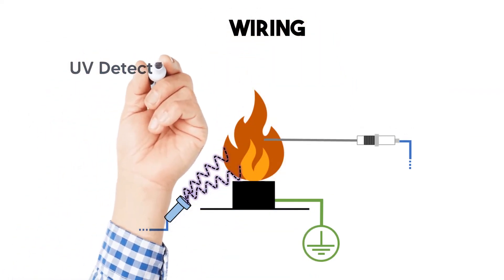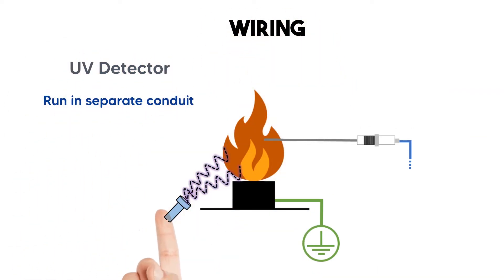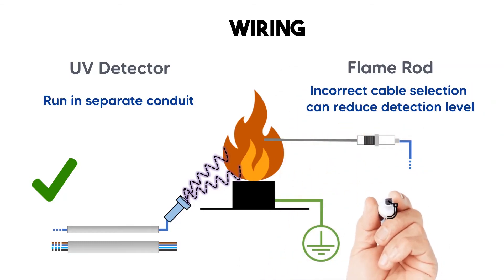Wiring. The UV detector requires wire leads to be run in separate conduit. Incorrect cable selection for flame rods can reduce the detection level.